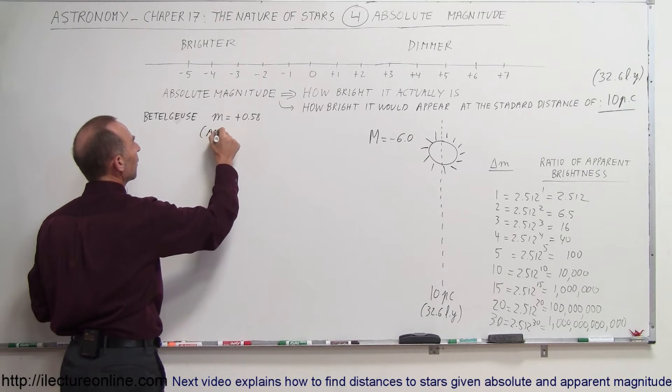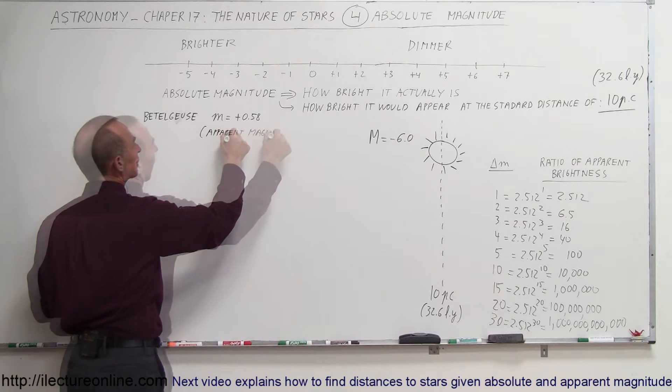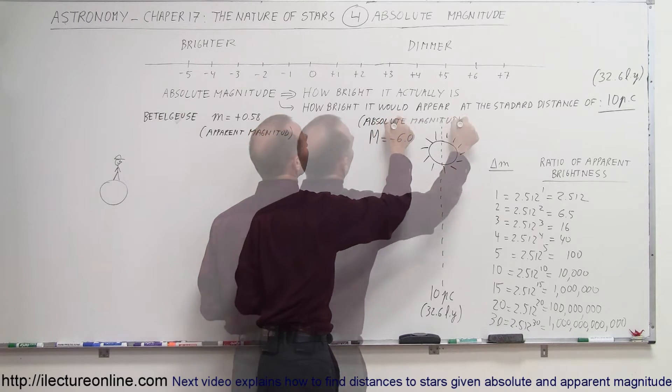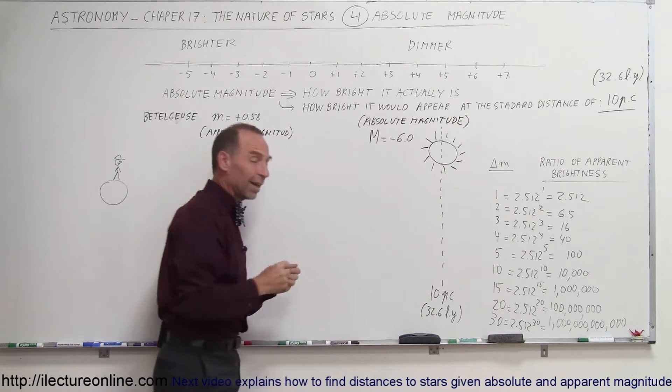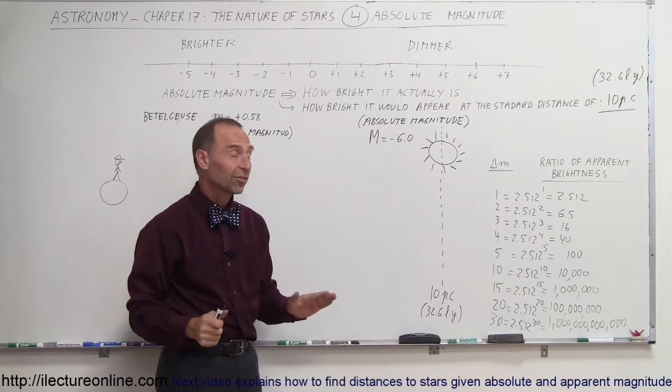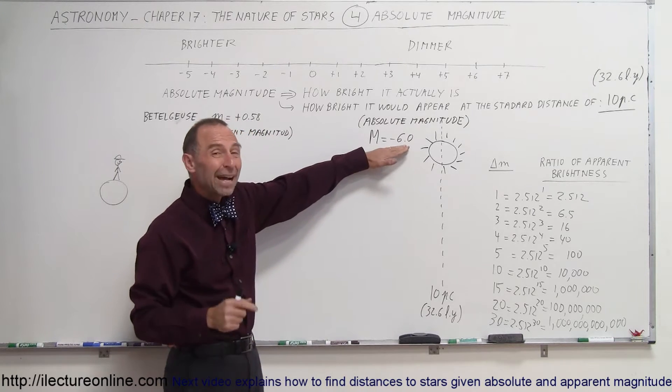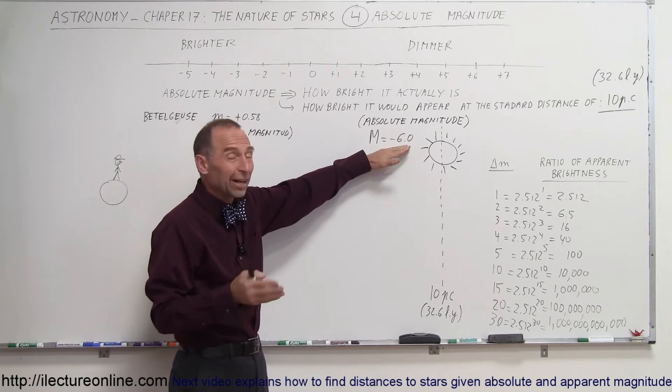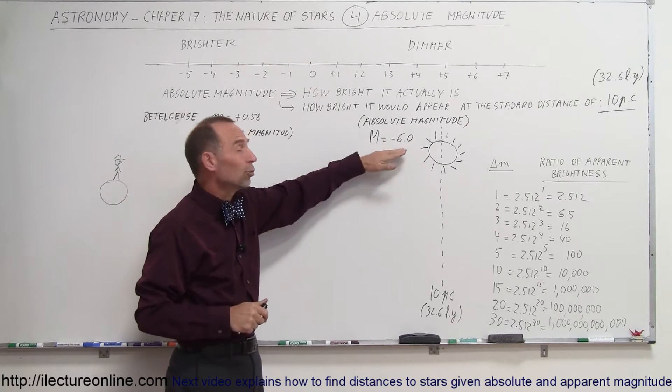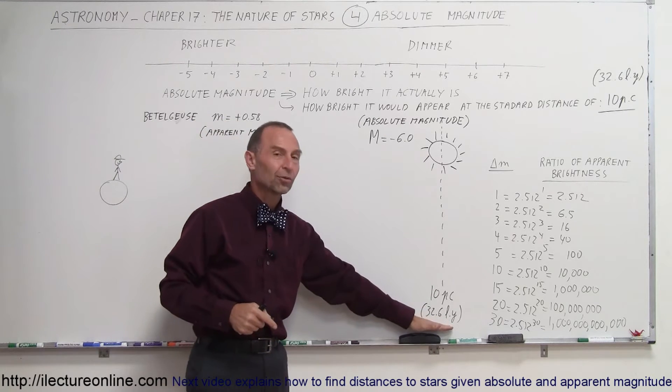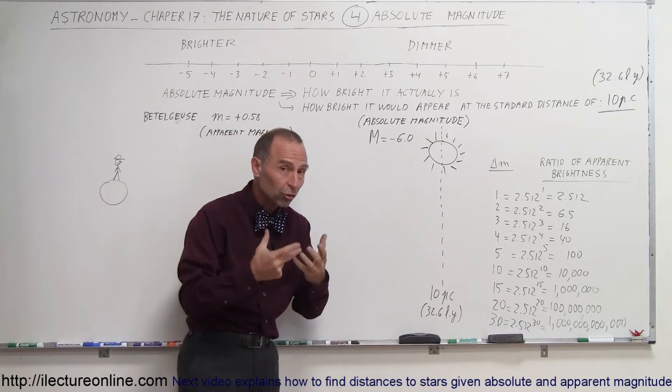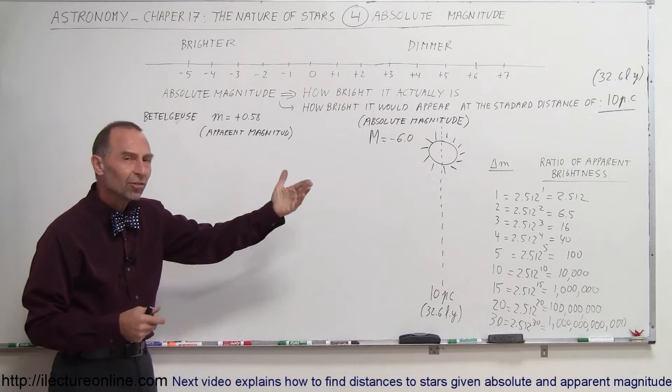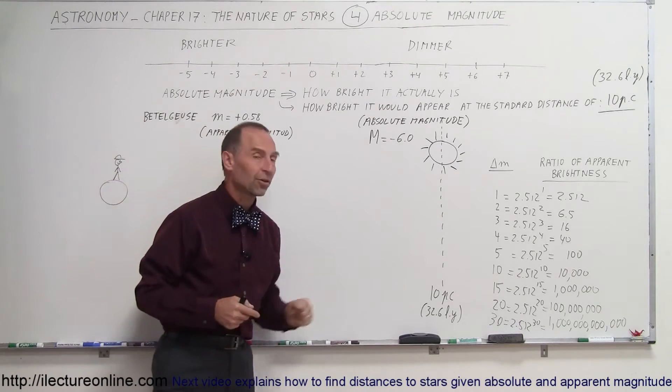When we use small m, we do mean apparent magnitude. And when we use the big M, we call it the absolute magnitude. So, if we place Betelgeuse at a distance of 32.6 light years, it would appear at a minus 6.0. It would be brighter than the planet Venus, by actually quite a bit. It would be brighter by almost a factor of 5. So, Betelgeuse would look 5 times as bright as Venus at a distance of 32.6 light years, but the way it looks to us, from wherever it is, it's only a plus 0.58. So, it's a lot dimmer where it is than what it would appear to be if it was 10 parsecs away.